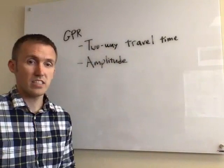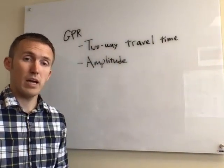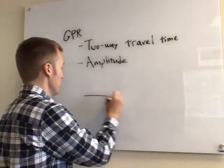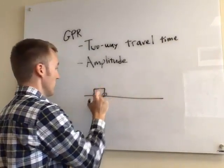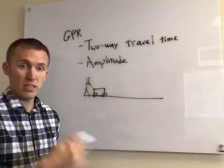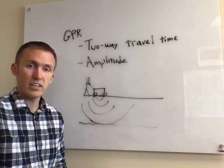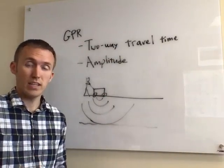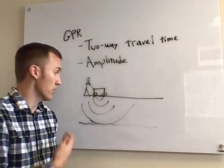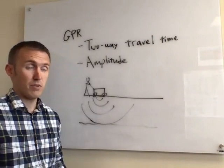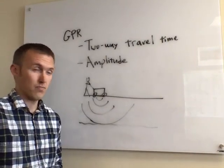This is mostly in Section 13.3 as well as a little bit in 13.1, 13.2, and 13.4. So fundamentally, GPR is measuring two parameters: two-way travel time and amplitude. We have our GPR on the surface, maybe we're pushing it along, and we're sending out a signal that encounters reflectors. The signal that we're sending out is not seismic — it's electromagnetic radiation, radio waves essentially, that are penetrating down into the ground. Radio waves are a type of electromagnetic radiation.